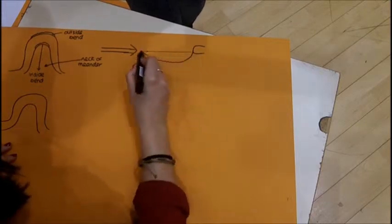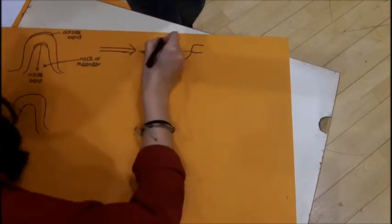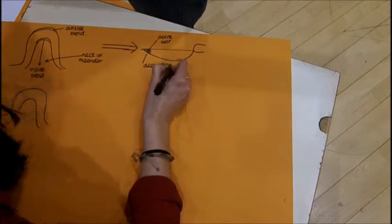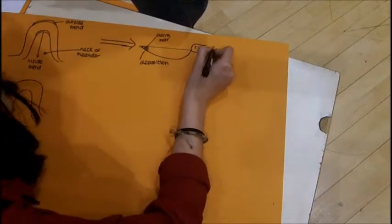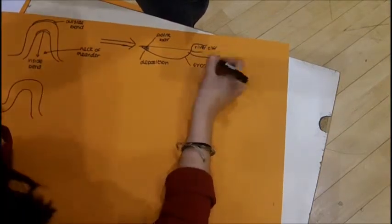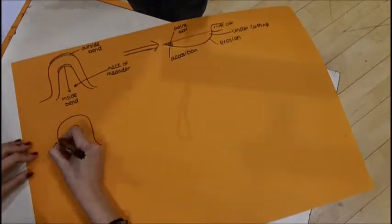On the outside of the meander, the water is flowing at its fastest and carries more material, which erodes the river bank, forming what is called the river cliff. On the inside of the bend, where the flow is slower, material is deposited, forming a point bar.